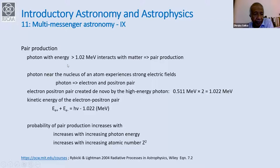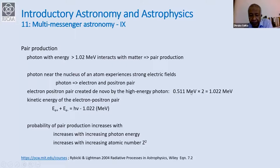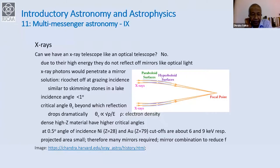The other process is pair production: when photon energy exceeds 1.02 MeV, it can create an electron-positron pair. These are de novo pairs created by high-energy photons. At least 1.02 MeV is required since the rest mass energy of each particle is 0.511 MeV. Extra energy goes into the kinetic energy of the pair. The probability of pair production increases with both photon energy and atomic number.